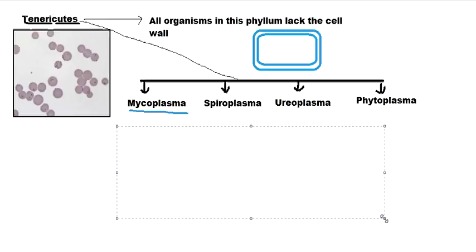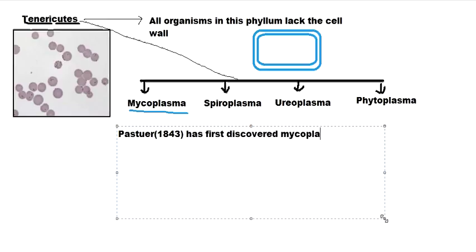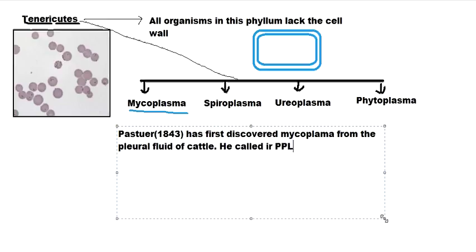Pasteur, in the year 1843, first discovered Mycoplasma from the pleural fluid of cattle, and at that time he called it PPLO, which stands for Pleuropneumonia-Like Organism.